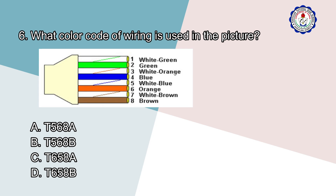Number 6: What color code of wiring is used in the picture? A. T568A, B. T568B, C. T658A, D. T658B.